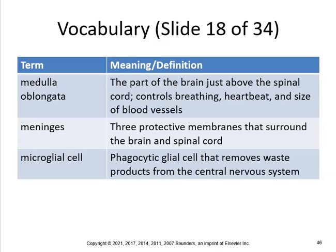Medulla oblongata, meninges, and microglial cells. Medulla oblongata is part of the brain just above the spinal cord; it controls breathing, heart rate, and blood vessels. As you study for the midterm, these are good terms. Meninges are three protective membranes that surround the brain and spinal cord. Microglial cell is a phagocytic glial cell that removes waste products in the central nervous system.